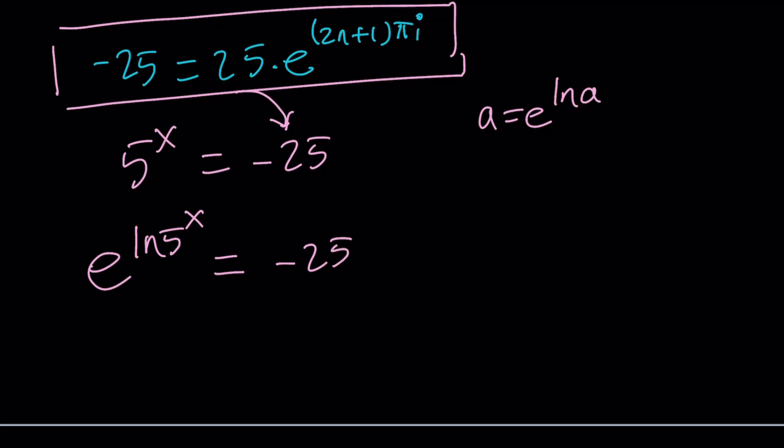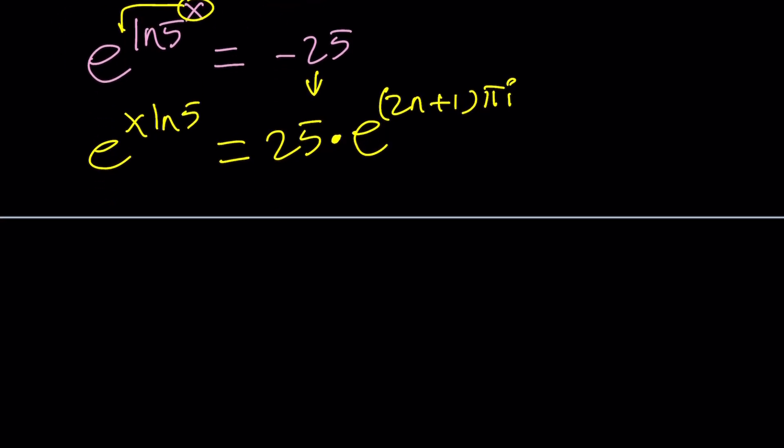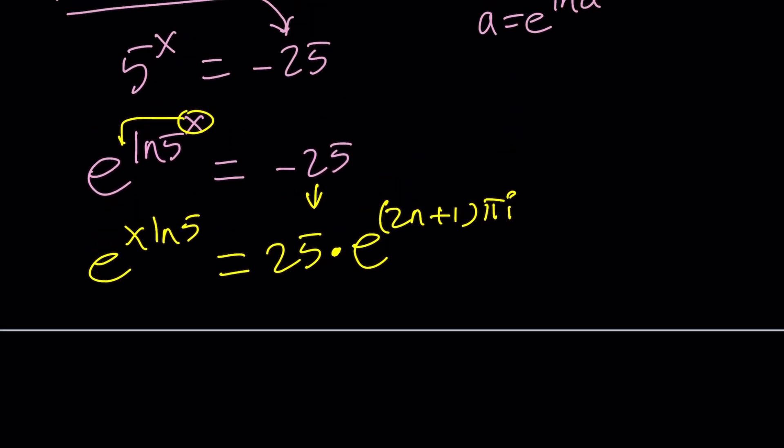Now, this x is going to move to the front, and we're going to get e to the power x ln 5 equals negative 25, but remember, we replaced negative 25 with this polar form 25 times e to the power 2n plus 1 pi i. So this polar number or polar form has two pieces. One of them is the modulus, the real part, which is multiplied by a power of e, which basically produces the real and imaginary parts of this number after you take out the modulus.